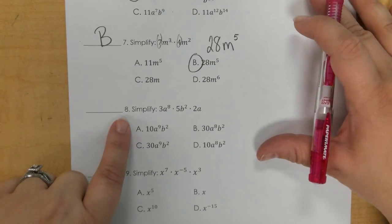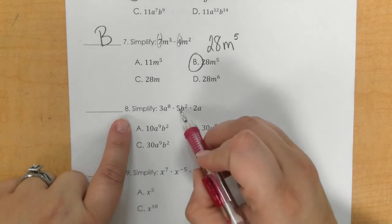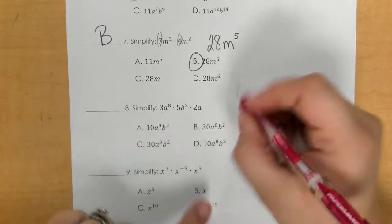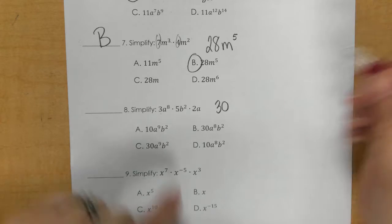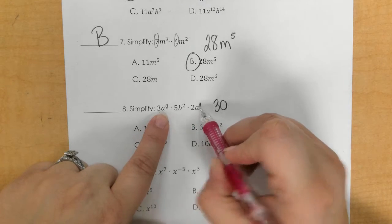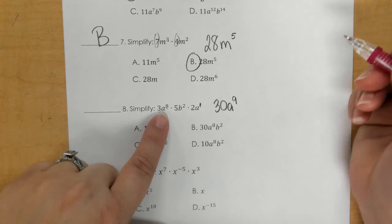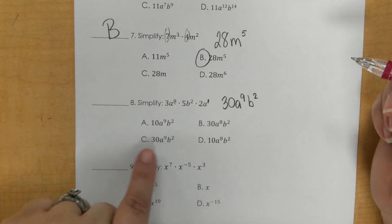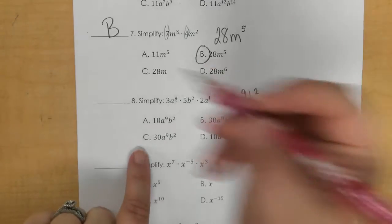In number 8, I'm going to multiply 3 times 2 and get 6, then 6 times 5 is 30. The a's, 8 and the invisible 1, become a⁹. And then b² just comes down. So I would have letter C, 30a⁹b².